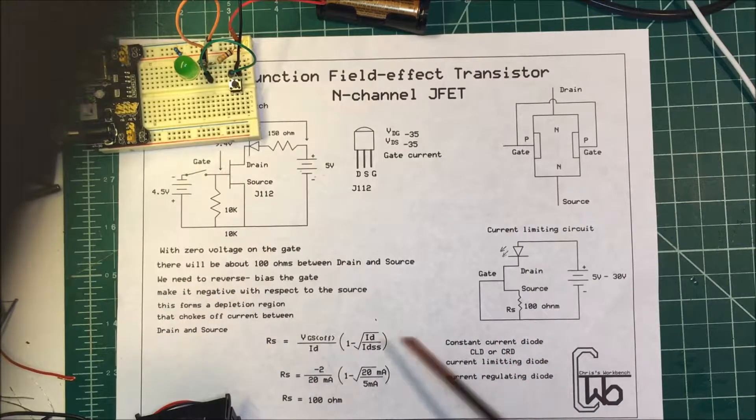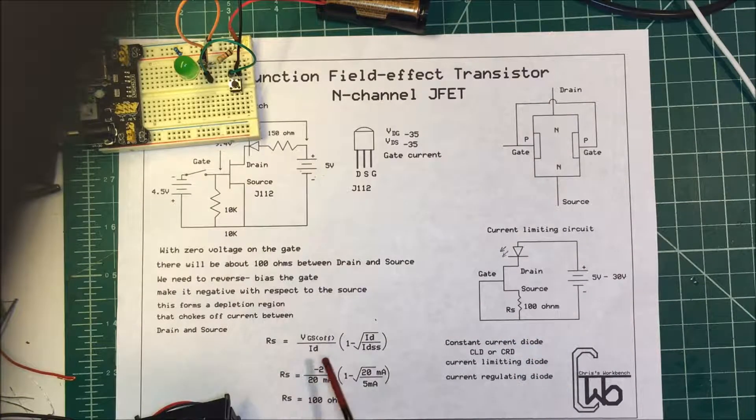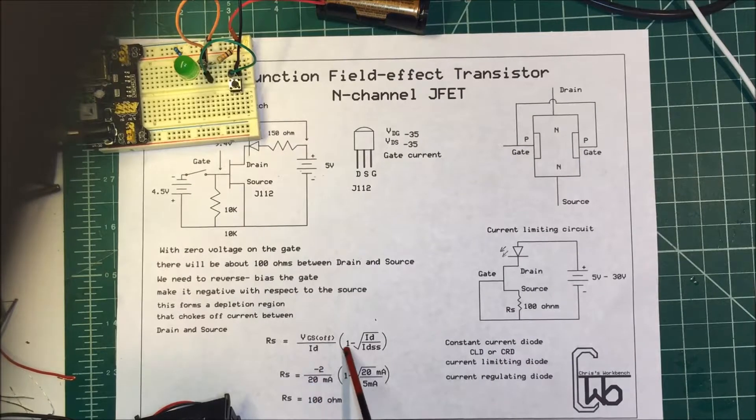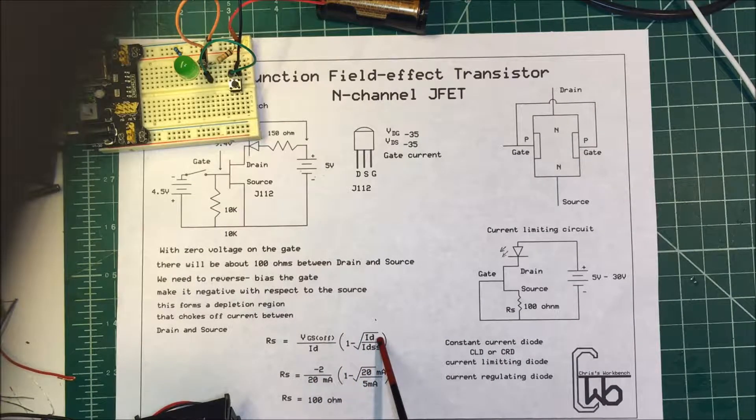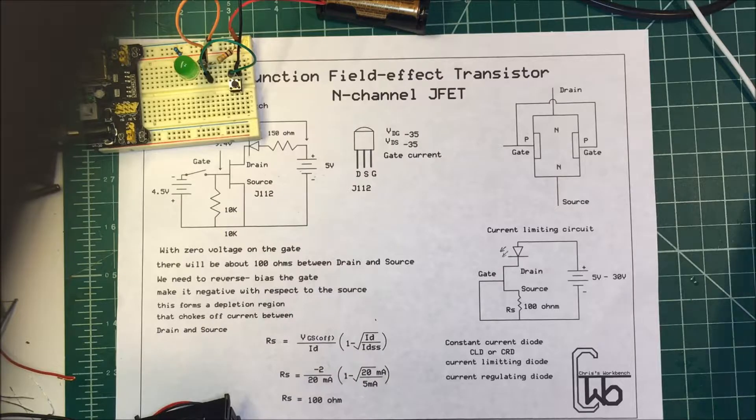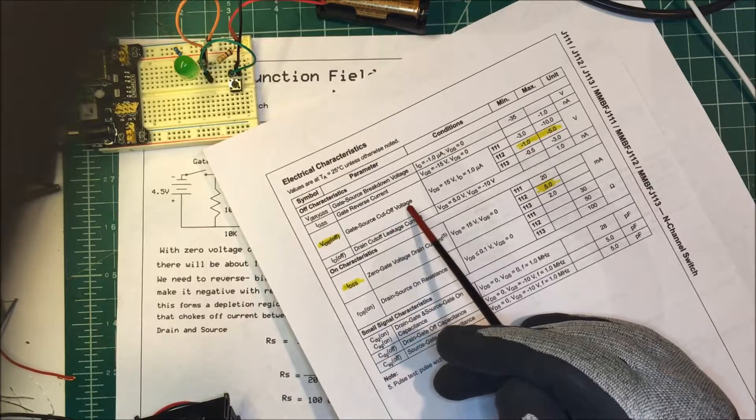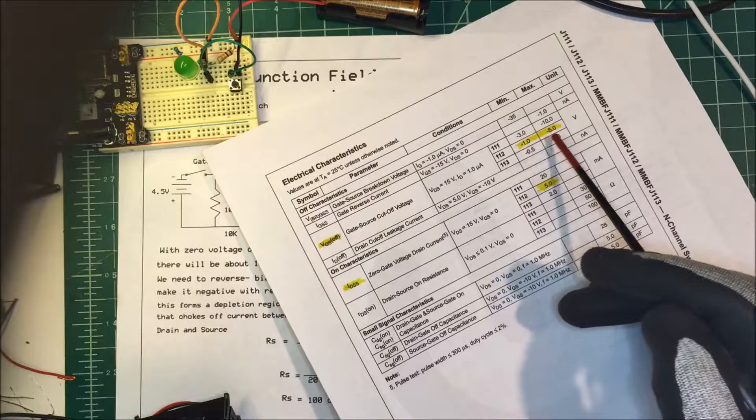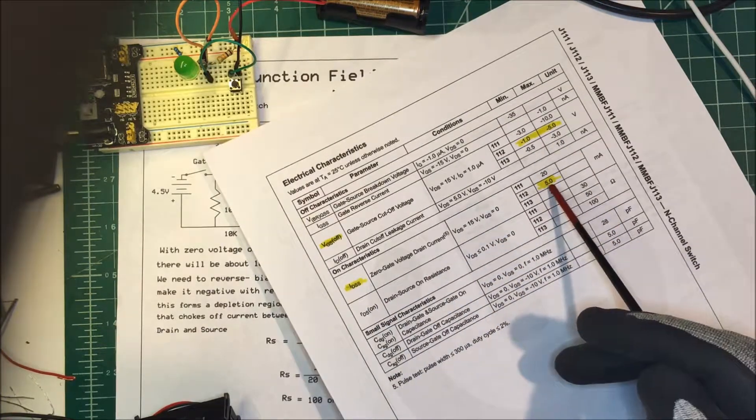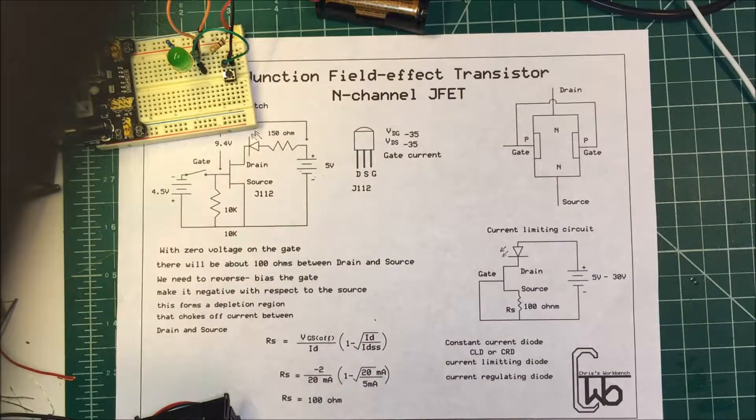In order to do that, we take a look over here. This RS here, the resistor on the source, is going to be equal to VGS off divided by the ID, which is our current that we want, times 1 minus the square root of our current we want divided by ID SS. This VGS off and the ID SS are both in the data sheets here. VGS off, gate source off, cut off voltage. That's between minus 1 and minus 5 volts depending on the minimum and max on this particular unit. And the ID SS, that's going to be 5 milliamps.